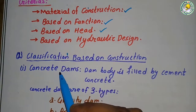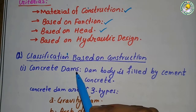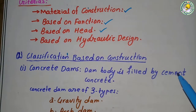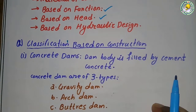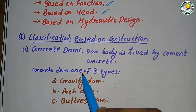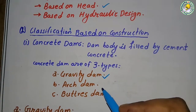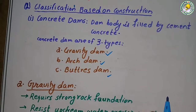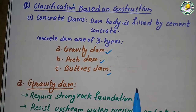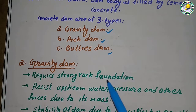On the basis of construction, the first category is concrete dams, whose body is filled with cement concrete. Concrete dams are classified into three types: gravity dam, arch dam, and buttress dam.